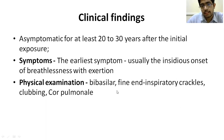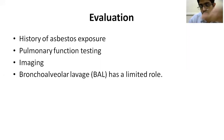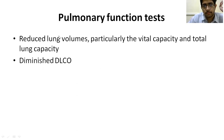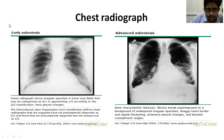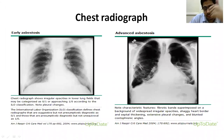Coming to evaluation of asbestosis, the history of asbestos exposure is very important — asking whether the person works in the shipbuilding industry, for example. Pulmonary function testing will show a restrictive type of lung disease with decreased total lung capacity and decreased DLCO. On chest radiograph, early asbestosis shows fine reticular shadows in the lower zones, while advanced asbestosis shows fibrotic lesions in the lower zones.